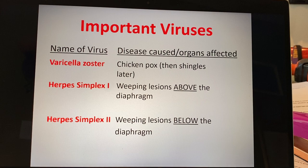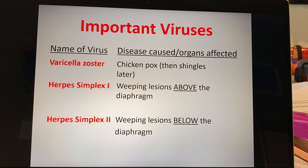It's not a clear-cut line — the infections can potentially cross — but the majority of cases adhere to this: simplex one gives you cold sores and things like that above the diaphragm, and simplex two gives you genital herpes below the diaphragm. These are perfect examples of chronic or latent viruses, because when do these tend to come out? When there's stress.